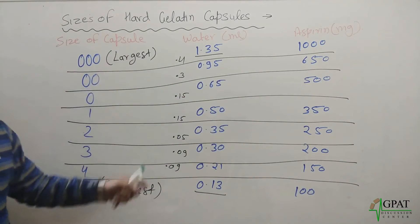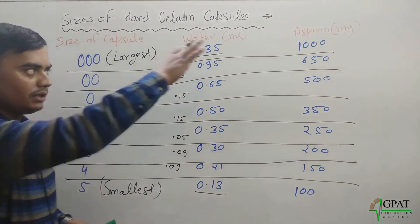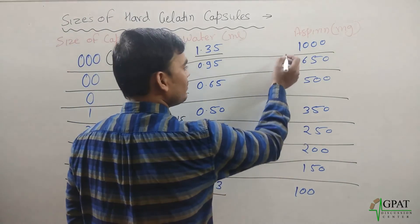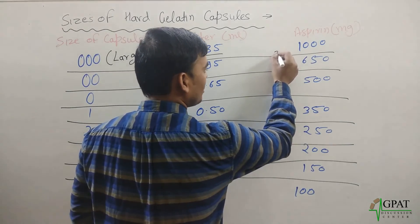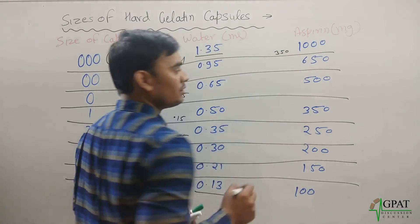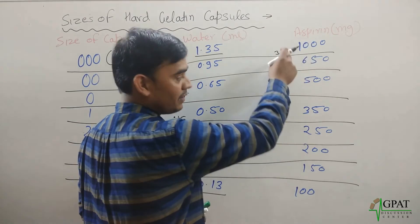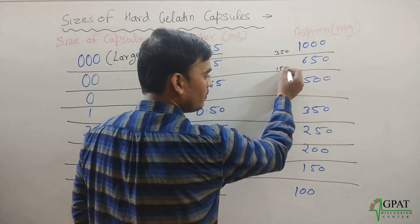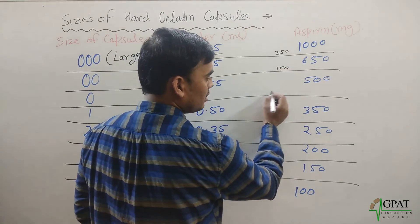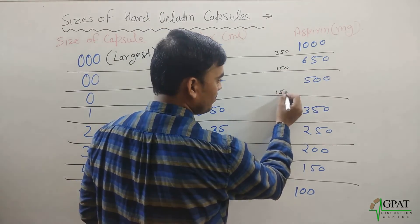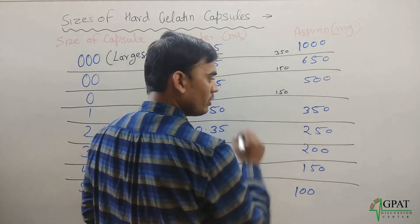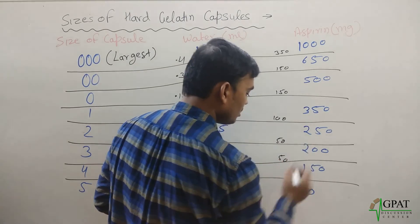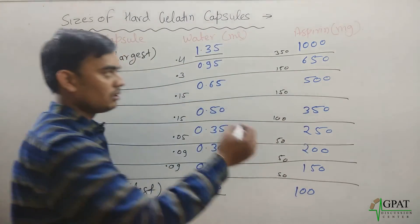By this table, you can easily remember the aspirin amounts. Simply remember the sequence: 1000, then 650, then 350, 250, 200, 150, 100. You can think of it as starting at 350 and reducing — subtract 50 from each step going down. This is a simple memory trick.